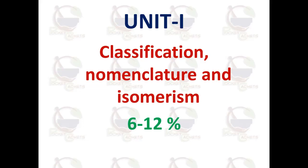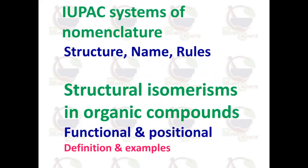Unit 1 carries almost six to twelve percent weightage. Within this unit, the most important topics are the IUPAC naming system and nomenclature, then structural isomerism. The IUPAC naming system and nomenclature are the most important for the exam.